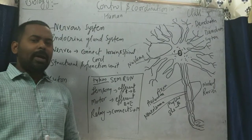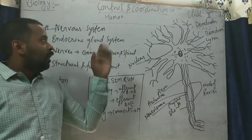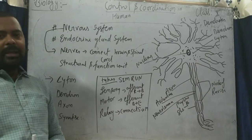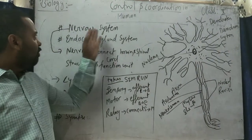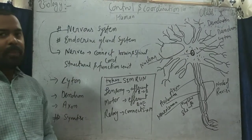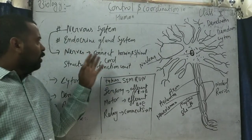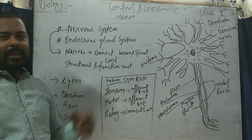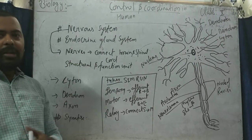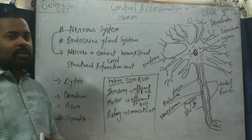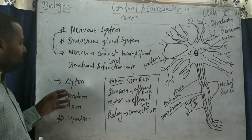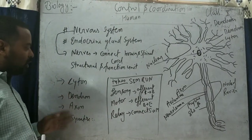The plant part is now completed. Moving towards control and coordination in humans — in humans, control and coordination takes place by two systems: the nervous system and the endocrine system. In the nervous system, nerve cells connect the brain and spinal cord. The neuron cell is the structural and functional unit of the nervous system. A nervous system is composed of the following structures: cytone, dendron, and axon.